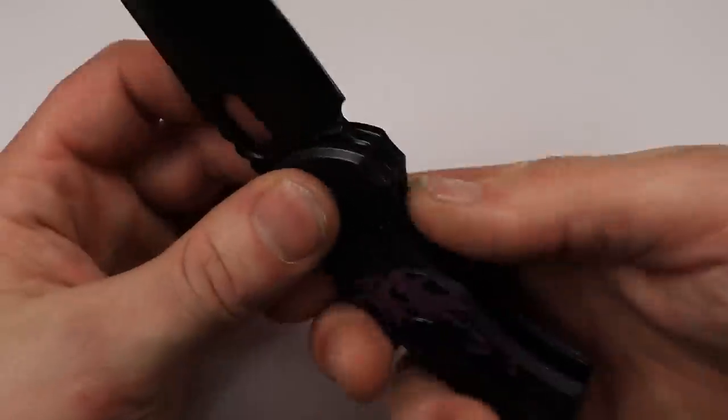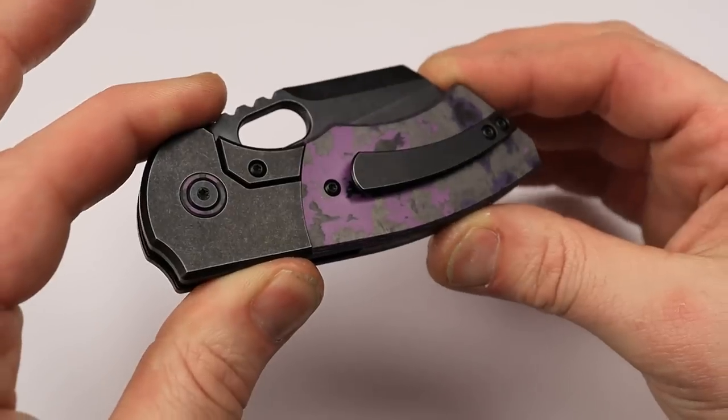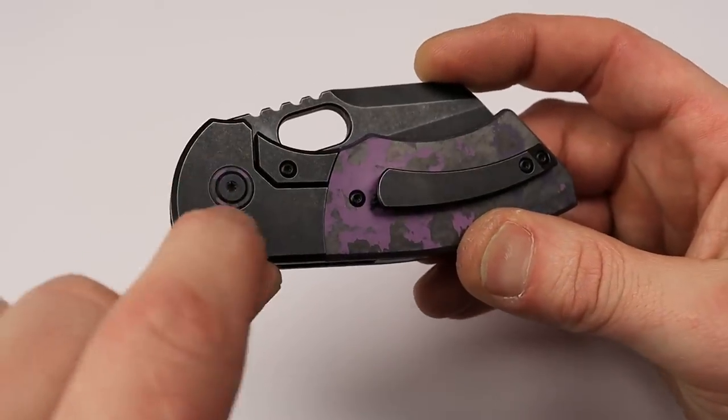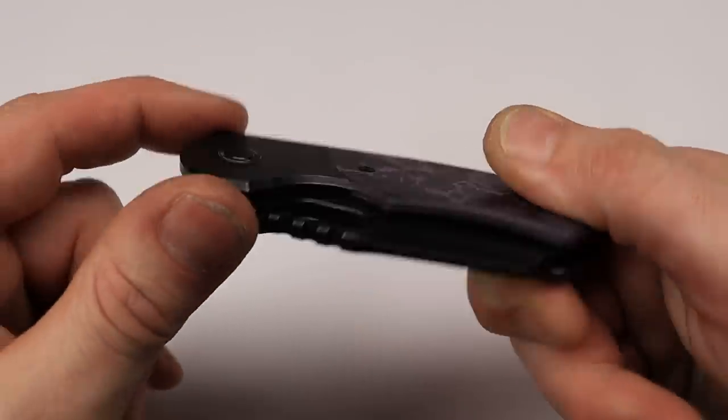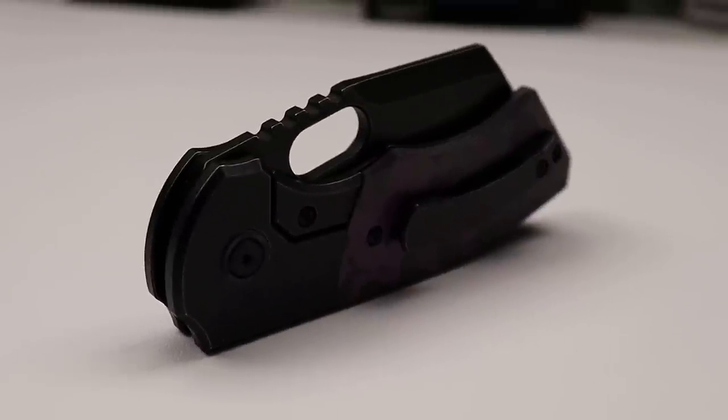And I really like to slow roll it because of that lock bar just cracking into place. You know, I've checked it, spine whacking and stuff. Very, very solid. And I also like how they have the purple fat carbon fiber pivot collar right there. Awesome, awesome knife. Like I said, lots of different colors on that one. Next.